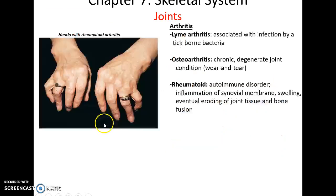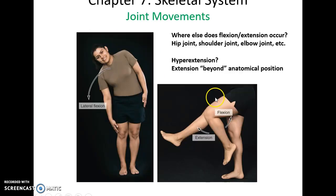Arthritis is a disorder of the joints caused by things like Lyme disease, infection, chronic wear and degeneration — known as osteoarthritis — or by an autoimmune disorder where the immune system attacks the structures of synovial joints, known as rheumatoid arthritis.